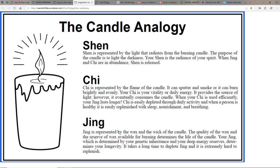Now some would basically just stay chaste and not engage as well. There were different schools of thought there. And chi is represented by the flame of the candle. It can sputter and smoke or it can burn brightly and evenly.